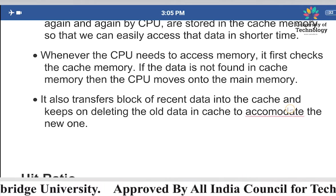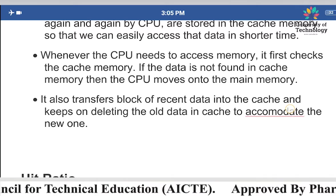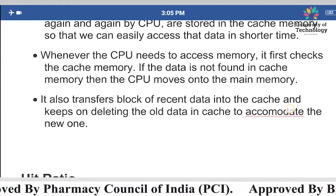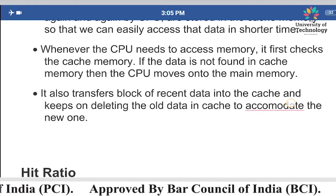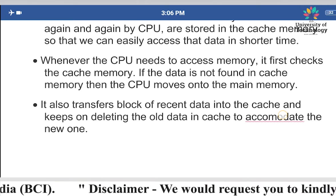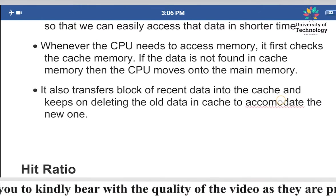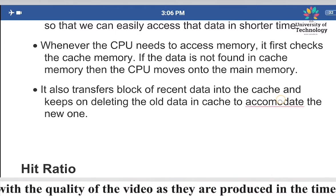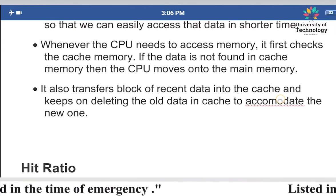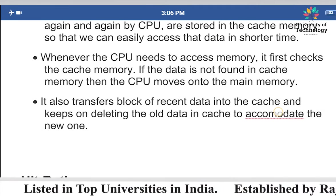Whenever the CPU needs to access memory, it first checks the cache memory. The CPU initially searches the cache memory to check whether the data it requires is inside the cache memory or not. If the data is found in the cache memory, it accesses it directly from there.